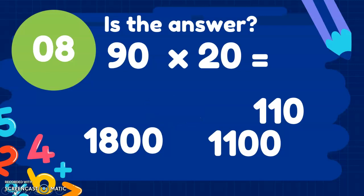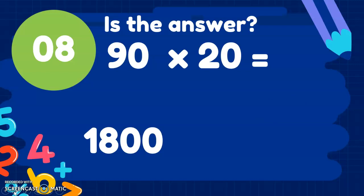It's not 180. It's not 1,100. And it's not 110. It's 1,800. And why is that? Well, we use 9 times 2, which we know is 18. We then need to make it 10 times bigger because we're doing 90, which is 180. And then we need to make it another 10 times bigger because we're timesing it by 20. So that means there's two 0s on the end of our 18. 1,800. Fantastic if you got that right.